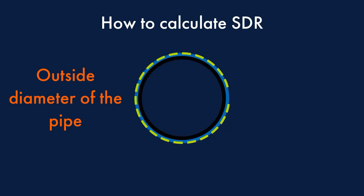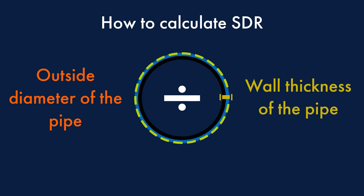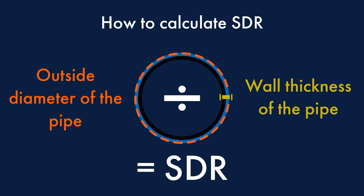In the same way, if you divided 180 by the known wall thickness of the pipe, it will give you the SDR rating of the pipe. So that's how the relationship of the SDR works.